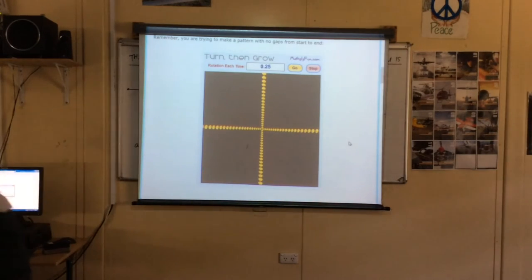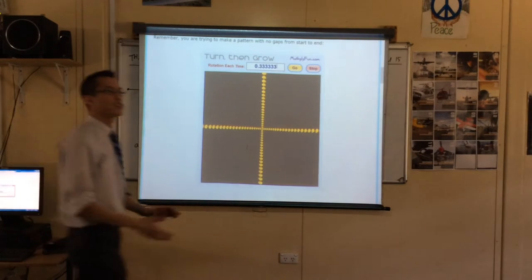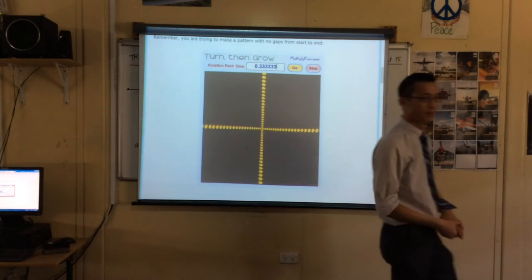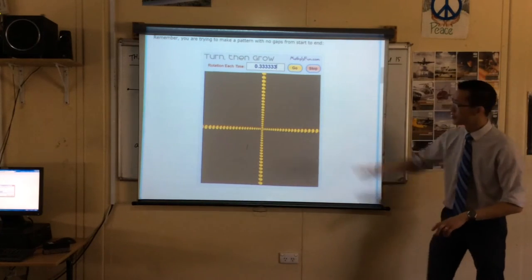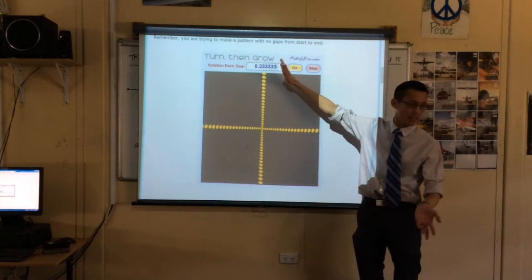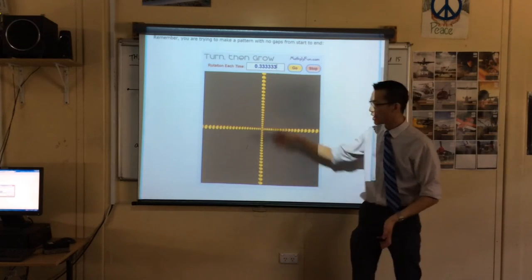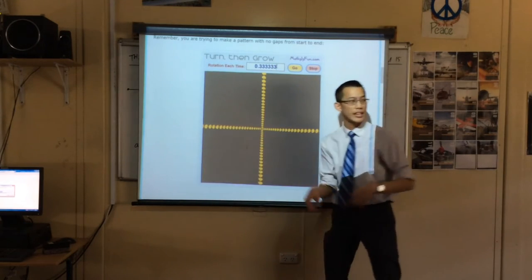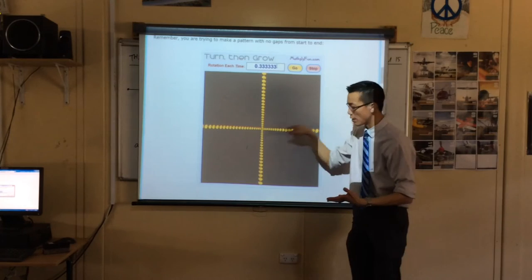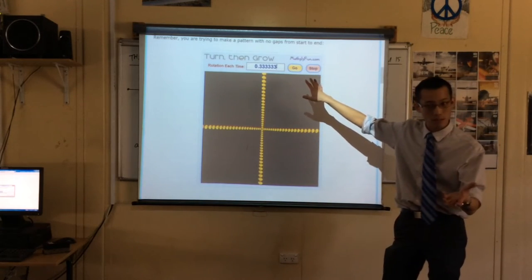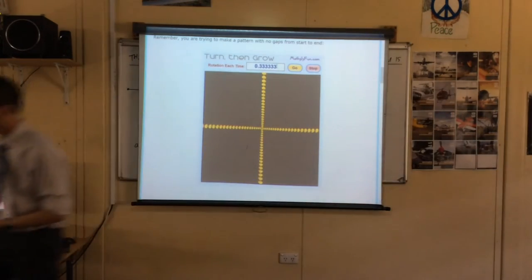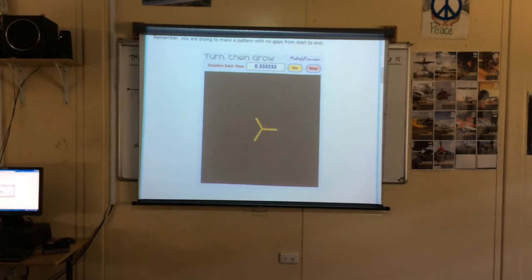Now, if I put in, unfortunately I can't put fractions here, but I put in this, what do you predict will happen? This is like a third, isn't it? It's pretty close, it's not exact, but it's a third. When I did a half, we got two lines, when I did a quarter, we got one, two, three, four lines. This is a third, so what do you predict? Three lines.